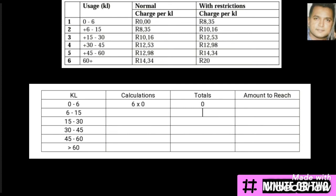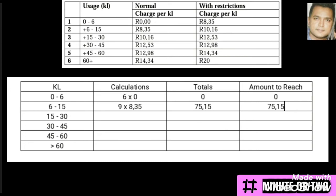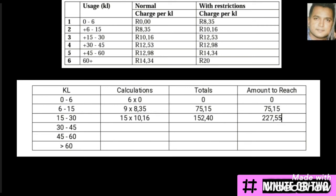In the table, the first row covers 0 to 6: the calculation is 6 times 0, giving a subtotal of R0. The second row covers 6 to 15 — that's 9 kilolitres — so 9 times R8.35 gives a subtotal of R75.15. Adding R0 and R75.15 gives R75.15 so far. Moving to the third interval, 15 to 30, we multiply 15 times R10.16 and get R152.40. Adding R152.40 to R75.15 gives R227.